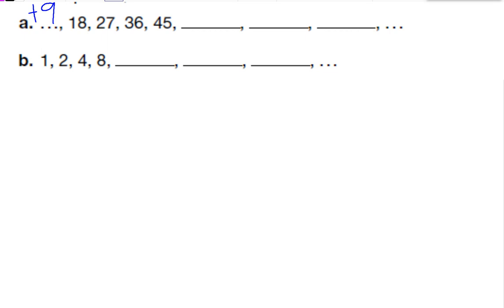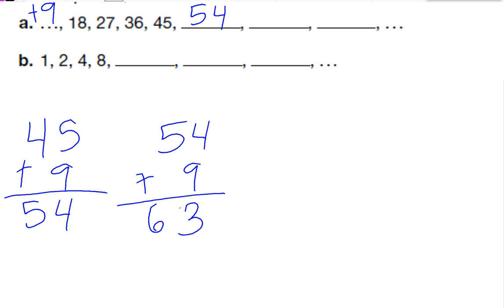So to find the next terms, I'm going to do first 45 plus 9, which equals 54. And then 54 plus 9, which is 63. And then 63 plus 9 is 72. Okay, so there are my next numbers in the sequence.